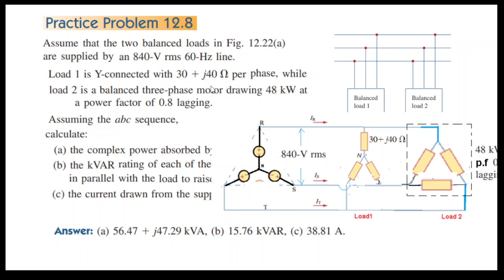Now let's see what all is given. Supplied voltage: 840 volt line-to-line. Load one is Y-connected with impedance 30 plus j40, so each arm has an impedance of 30 plus j40. Load two is a balanced three-phase motor drawing 48 kilowatts, and the power factor is 0.8 lagging. With this information we'll calculate the three required terms.